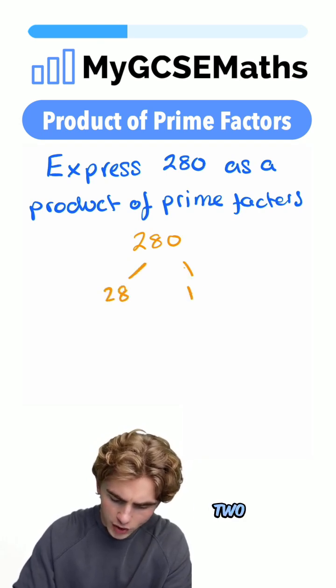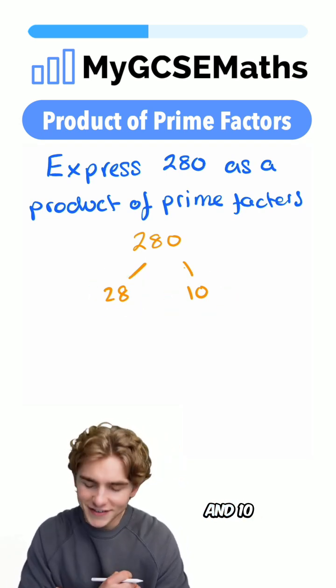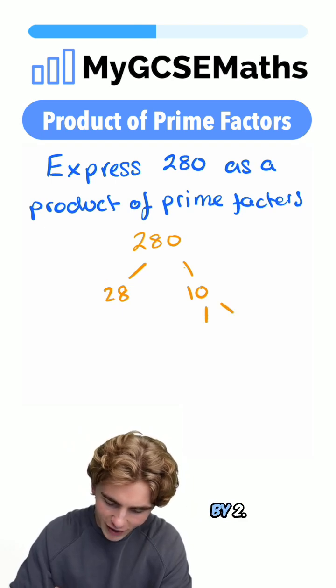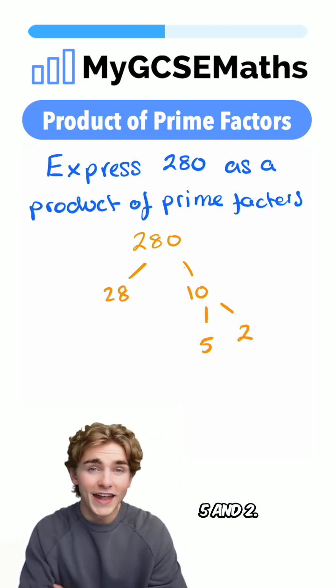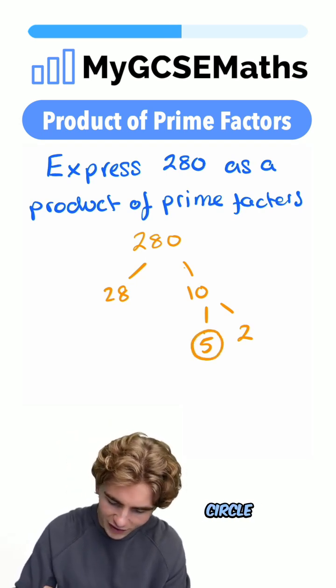We look at those two numbers and we can see that neither of them are prime numbers, so we're going to split them down into further factors. 10 can be written as 5 multiplied by 2, so we can split it into 5 and 2. Now because 5 and 2 are both prime numbers, we're going to circle both of those. Circle our 5, circle our 2.